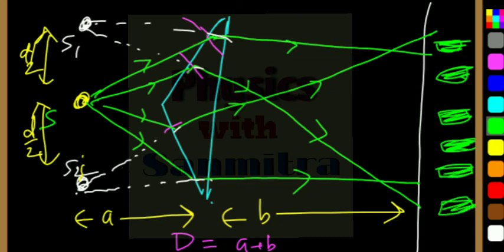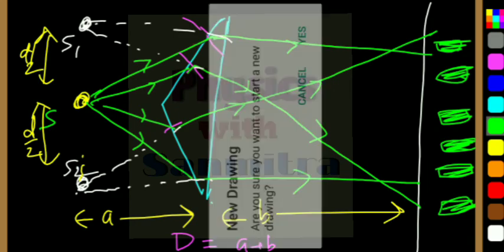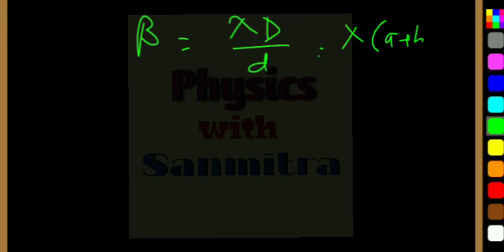This is the setup to conduct Young's double slit experiment. Now let me write down the formula. Fringe width beta equals lambda D by d. What is D? D is a plus b. So beta equals lambda times (a + b) by d.